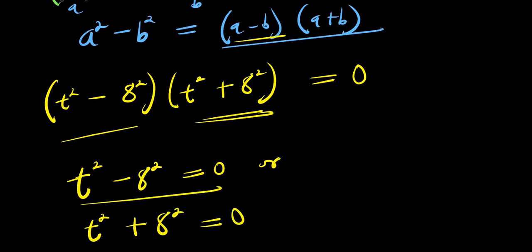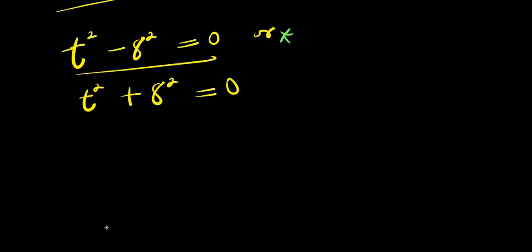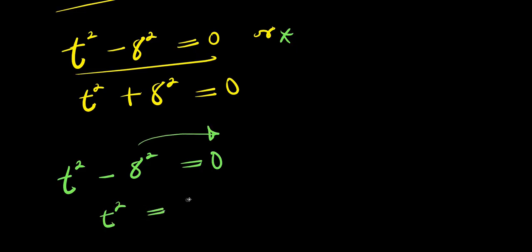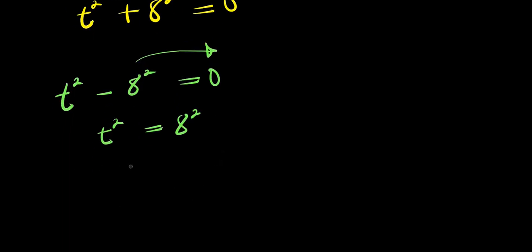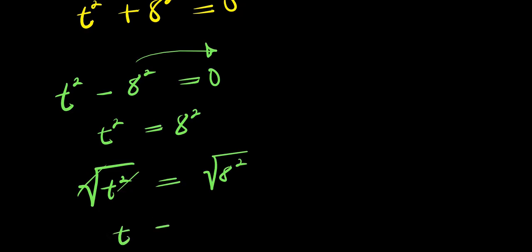Let's solve the first equation: t power 2 minus 8 power 2 equals 0. Moving 8 power 2 over, we have t power 2 equals 8 power 2. Taking the square root of both sides, we get t equals plus or minus 8.